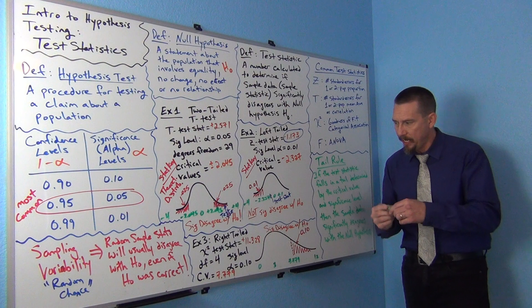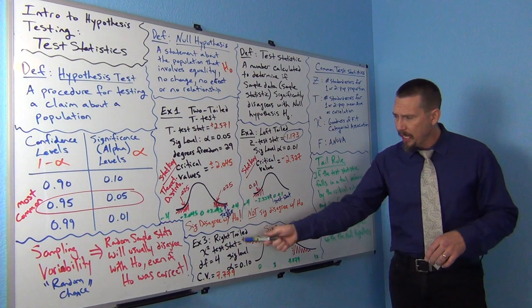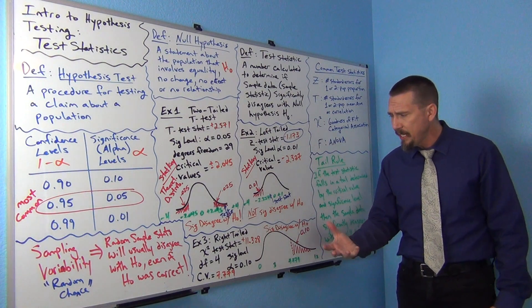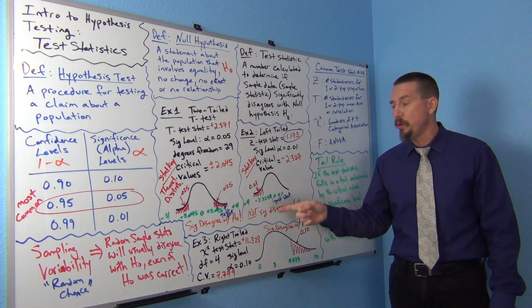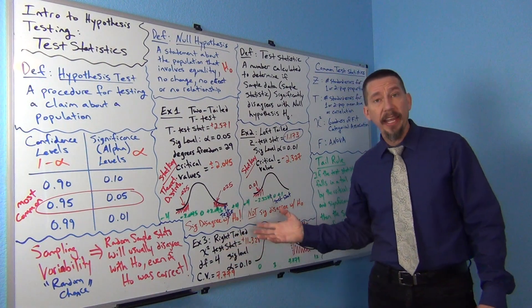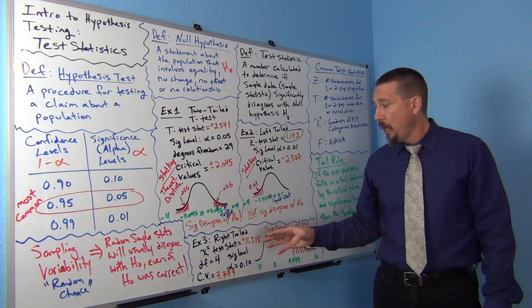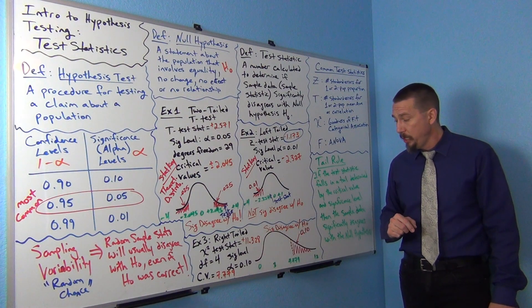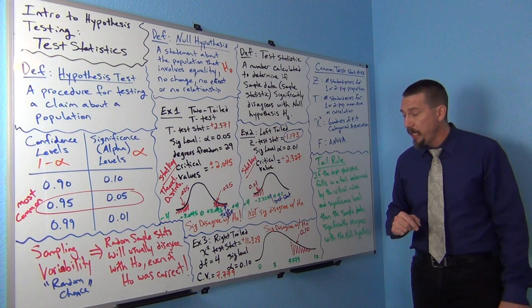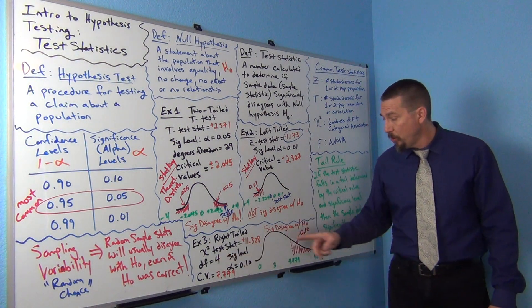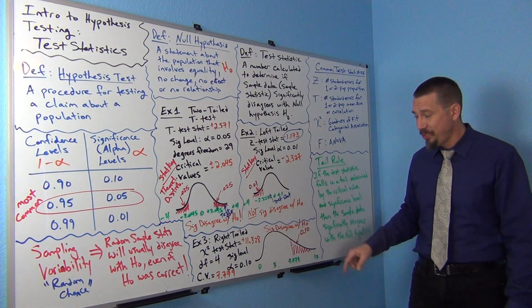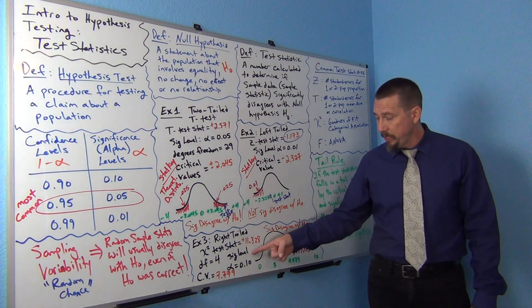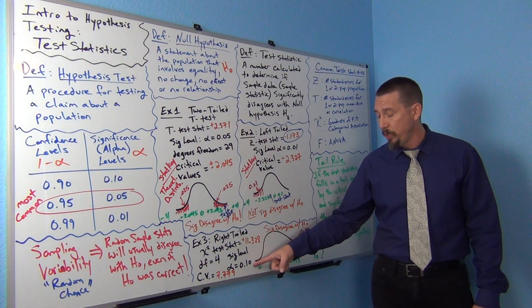Here's example three. Now we have a right-tailed test with a chi-square test statistic. Even if you don't understand everything about the test statistic yet, you can still get the idea of what this tells you about the data. Chi-square is a more advanced kind of test statistic — it's a non-normal distribution. If I was dealing with degrees of freedom 4, the chi-square distribution looks very skewed right. They said they're using a significance level of 10%, or 0.10.